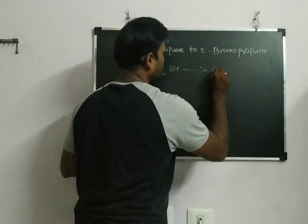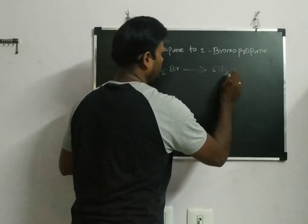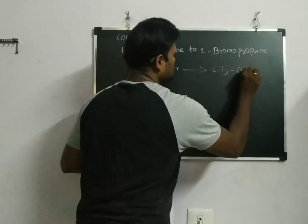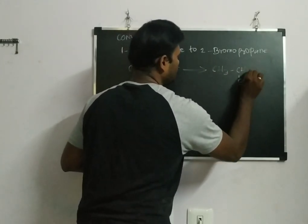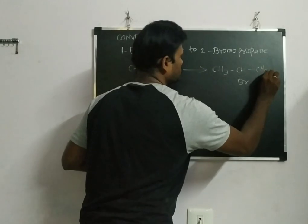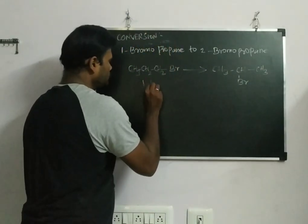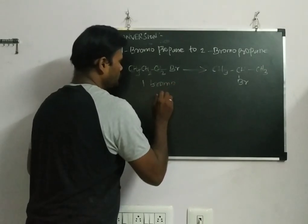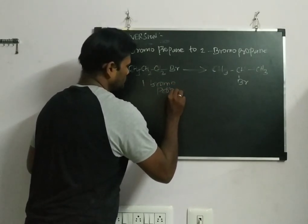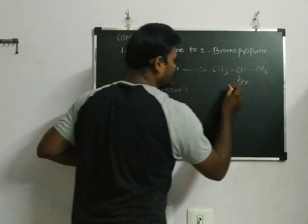What about 2-bromopropane? I have to get 2-bromopropane like this: CH3-CH(Br)-CH3. This is 2-bromopropane.